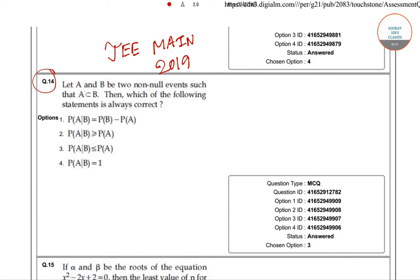Question number 14 is a probability theory question: let A and B be two non-null events such that A is a subset of B. Then which of the following statements is always correct? Non-null means these two events are not null events — they contain at least one element. A null event contains no element, so A and B each contain at least one element.